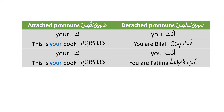We have learned already that anta means 'you,' and it is used for the second person masculine singular. When we use the attached pronoun, we use ka. For example, anta Bilalun — 'you are Bilal'; hadha kitabuka — 'this is your book.'